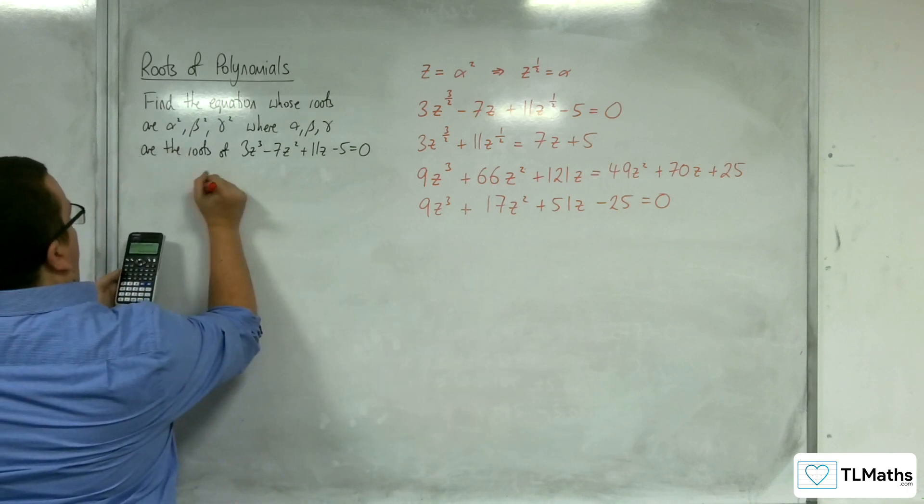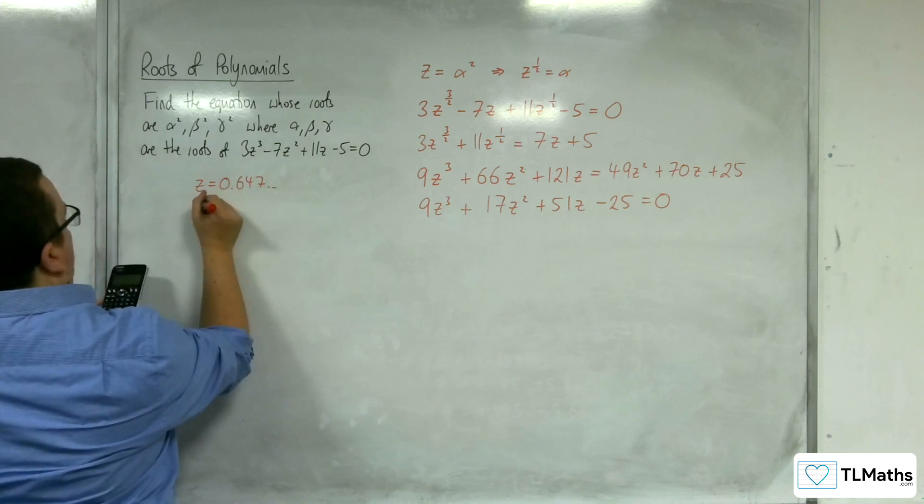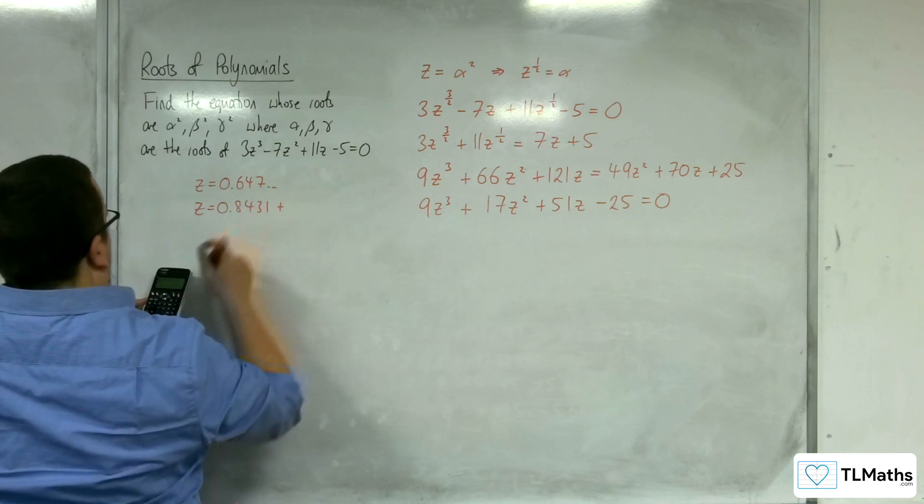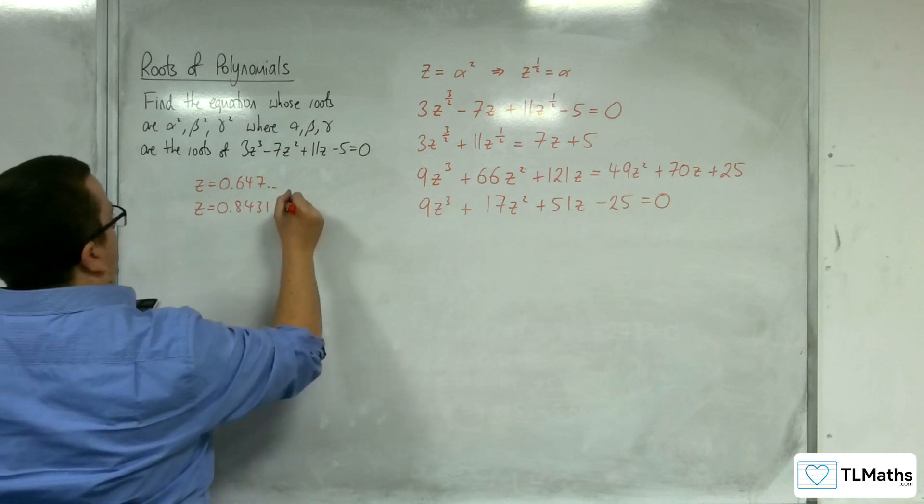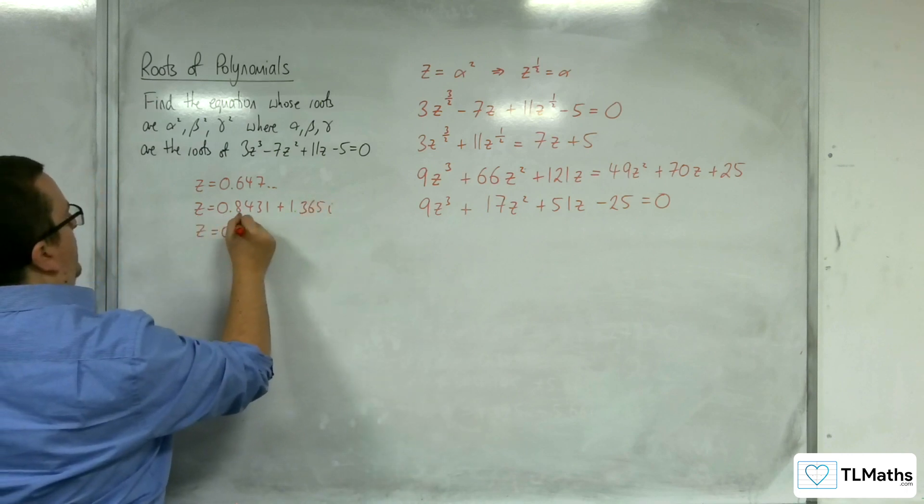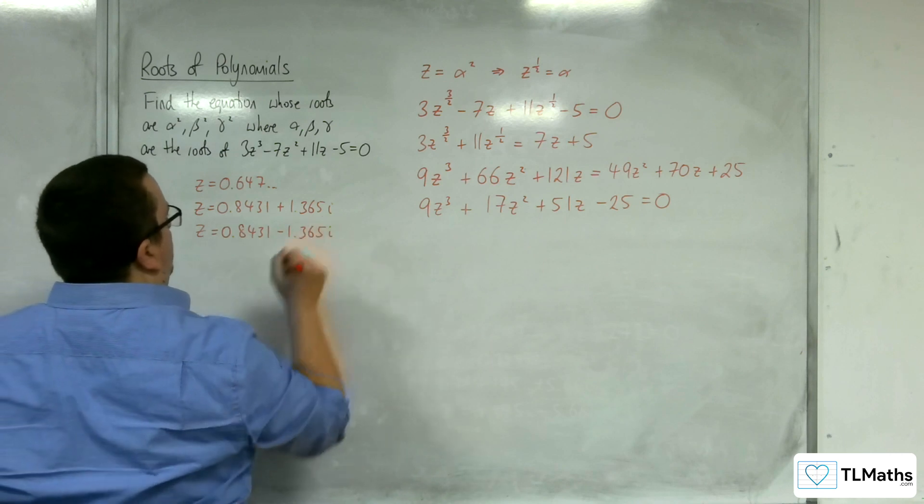So we get z equals 0.647, then we get 0.8431 plus 1.365i, and z equals 0.8431 minus 1.365i.